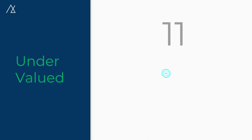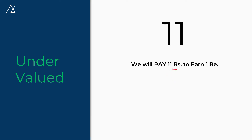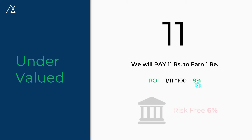Let's say Nifty is undervalued at a PE of 11. What does PE mean? PE means how much an investor is ready to pay to earn a single rupee. At PE 11, we pay 11 rupees to earn a single rupee. If we calculate the return on investment on this: ROI equals 1 divided by 11, multiplied by 100, which comes to around 9%.